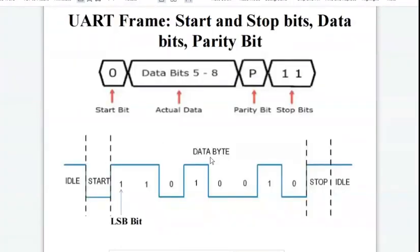This is a very simple UART frame, which consists of a start bit, which is zero, followed by the actual data or data byte. It can be five or eight bits. After that, one parity bit and one or two stop bits.